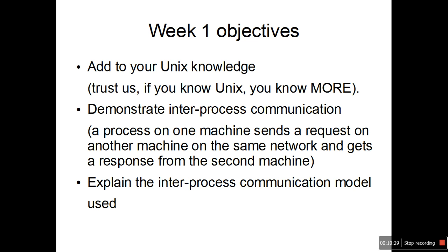Moving on, here are the objectives for week 1. First, you need to build on your Unix knowledge — we will help you along the way, and knowing Unix puts you ahead of most. Second, we intend to demonstrate inter-process communication between two computers on a network: the simplest program ever, equivalent to the hello world of inter-process communication, where one computer asks another to display some text and gets a confirmation back. Third and most importantly, we will explain how the inter-process communication model is used in networking. We hope to do justice in the first week and that you have fun as well. Thank you.